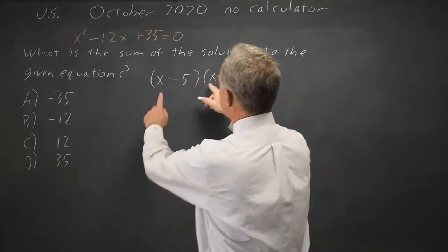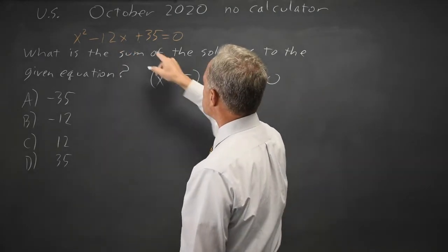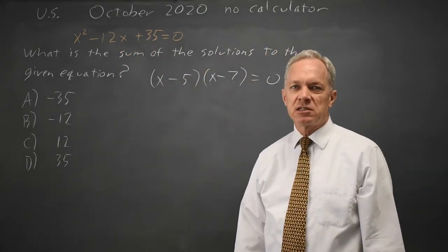If I FOIL, I get x squared minus 7x minus 5x is minus 12x, and then negative 5 times negative 7 is plus 35. So that is the correct factorization.